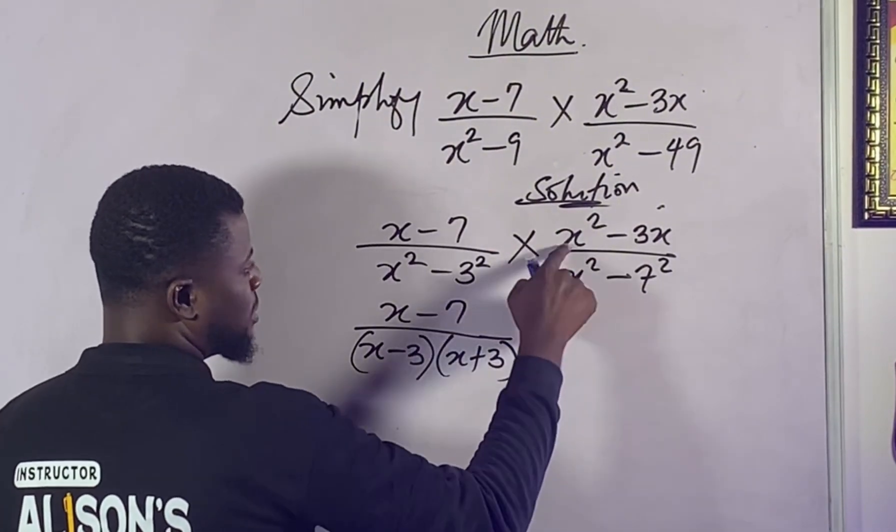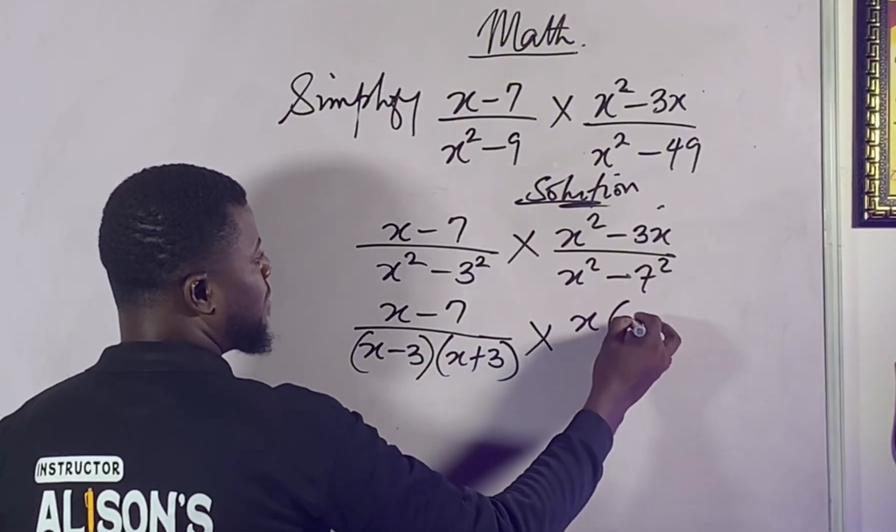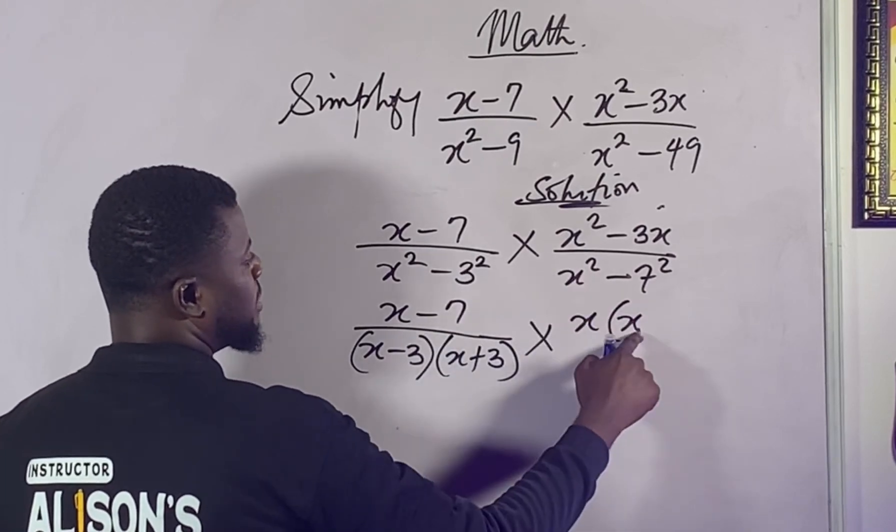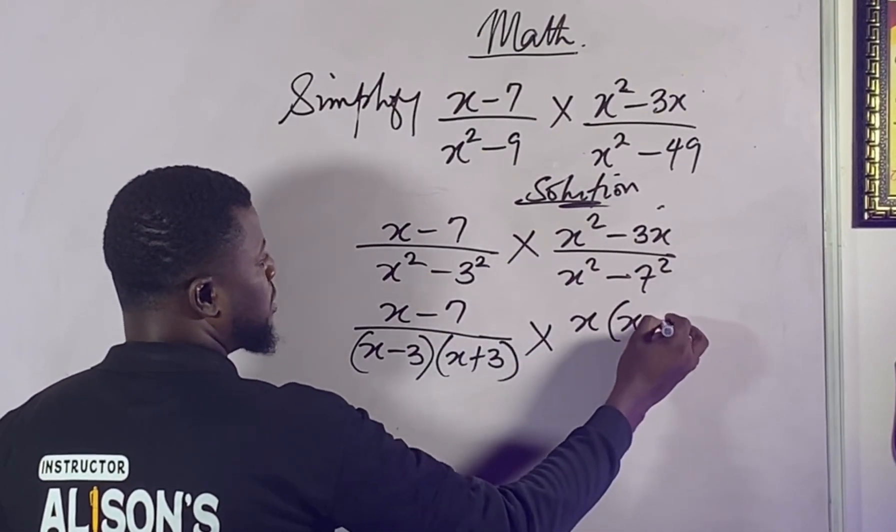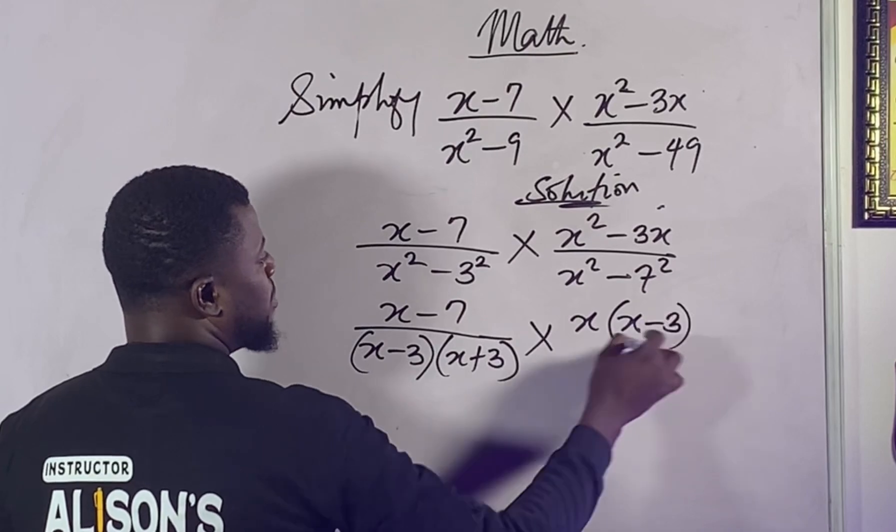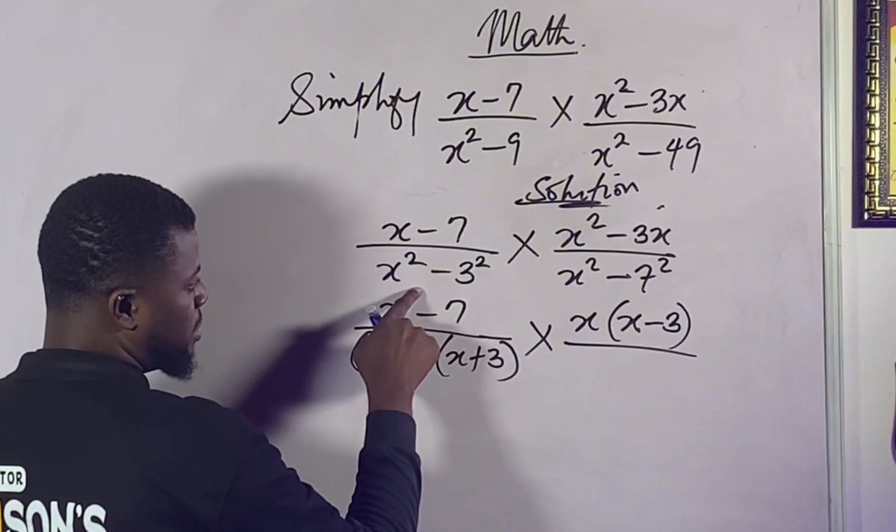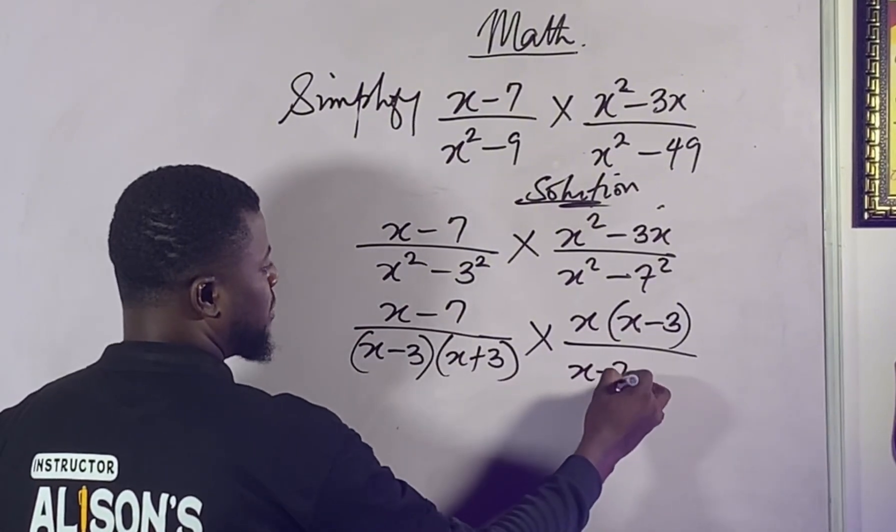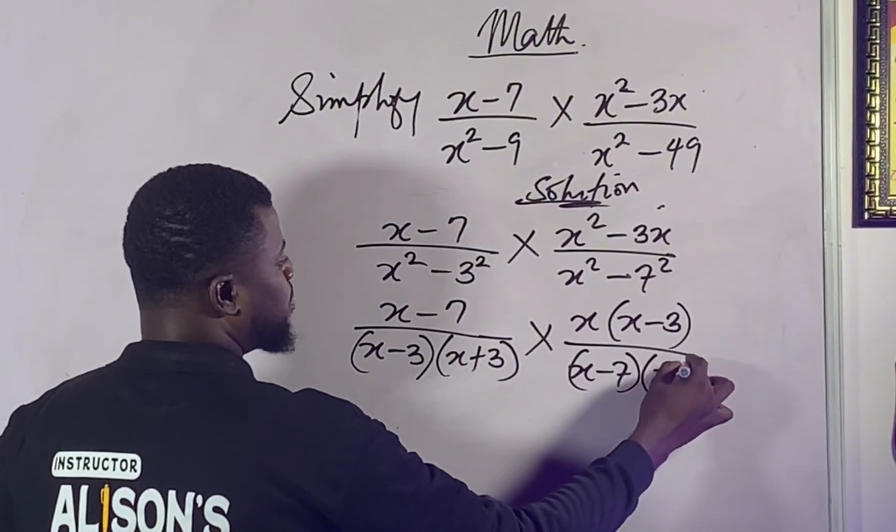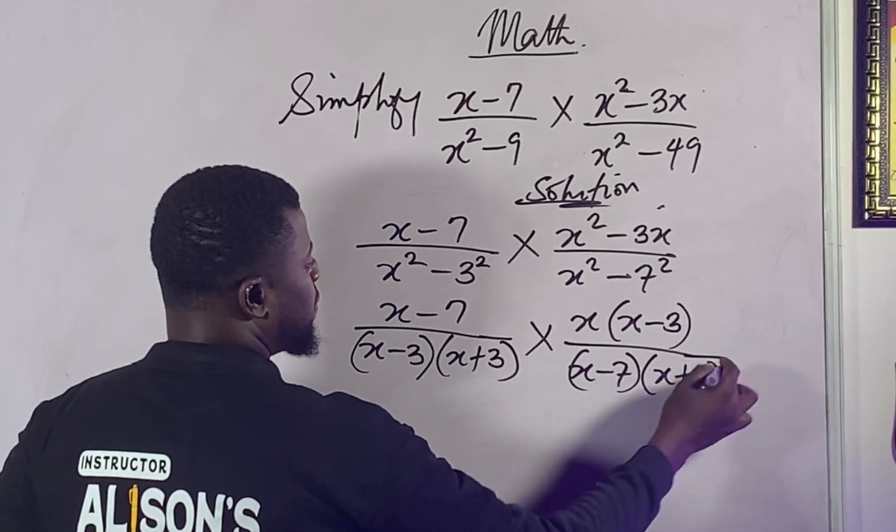So what do we need to do on this part? X is common, so factor out x and have x left. X times x will give you x squared negative, and we have three here because x times negative three will give us negative three x. Here is the same thing, the same rule applies: x minus seven into x plus seven, because if you expand this you should be able to have this.